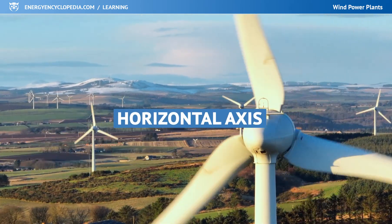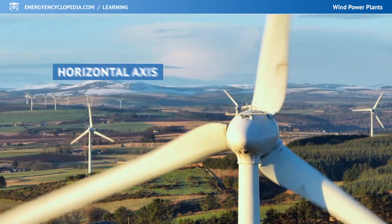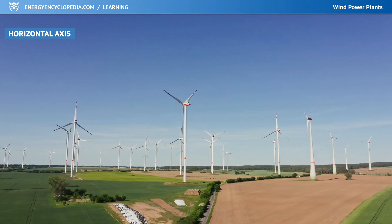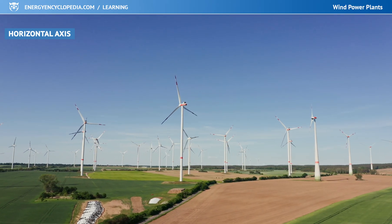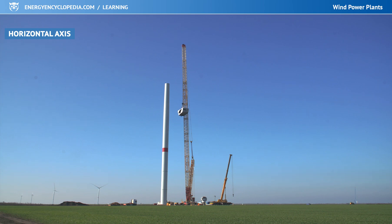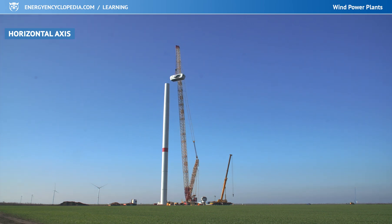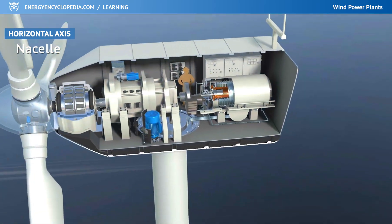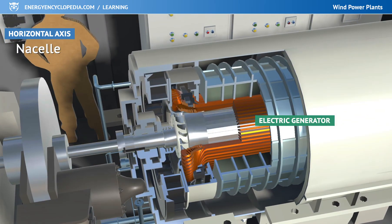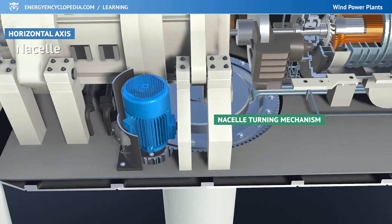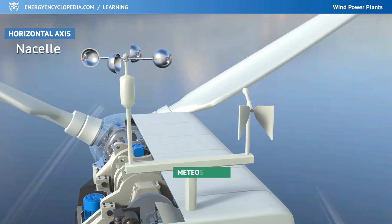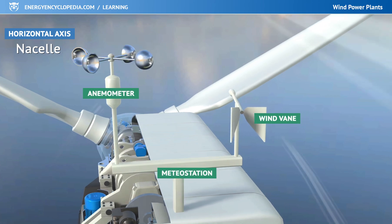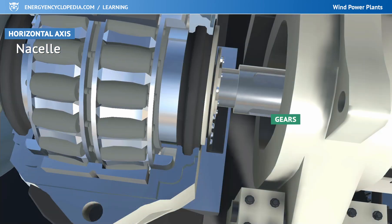Most contemporary wind turbines have a horizontal axis. This allows the wind to hit all the blades at once, making the device work more efficiently. However, all the necessary machinery has to be up near the rotor, which means lifting a multi-ton nacelle up to 200 meters. Inside the nacelle is an electric generator, a nacelle turning mechanism, a device for blade pitch control, a small weather station that informs the power plant about current wind speed and direction, and gears.